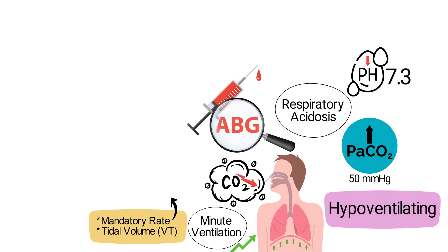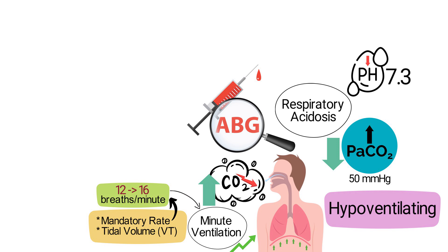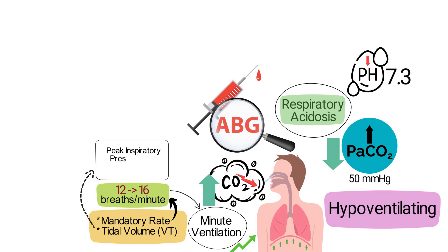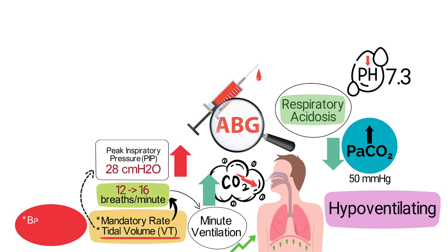The most effective and safest option is to increase the mandatory rate from 12 to 16 breaths per minute. This will increase the total minute ventilation, allowing the patient to expel more CO2 and thereby reducing the PaCO2 levels, which will correct the respiratory acidosis. While increasing the tidal volume could also help with ventilation, the patient's current peak inspiratory pressure is already at 28 centimeters of water pressure, so raising the tidal volume could push the peak inspiratory pressure higher, increasing the risk of barotrauma or volutrauma. Therefore, it's better to optimize the rate first.